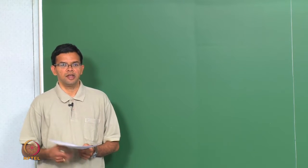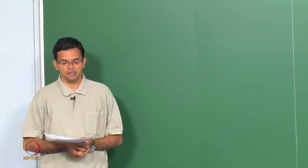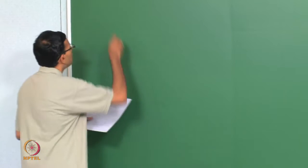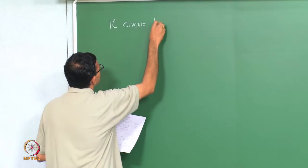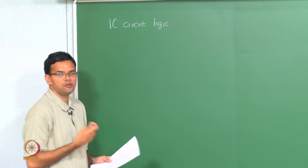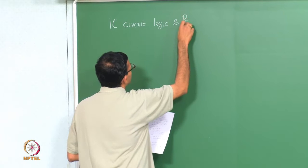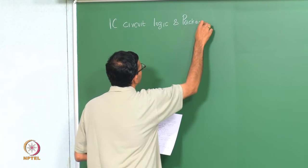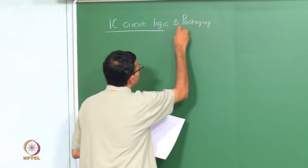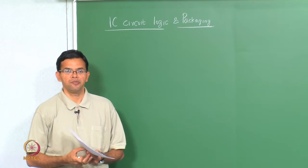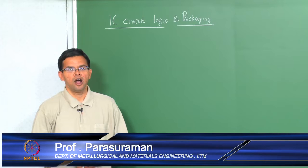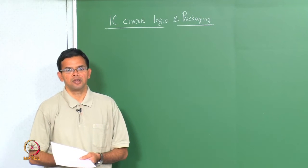Last class we looked at the various elements in the IC circuit. Today we are going to look at how these elements come together to form your typical integrated circuit. We are going to look at IC circuit logic and we are also going to look at packaging. Packaging refers to the fact that when you have the final die or the IC circuit made, how it is then integrated as part of your system.